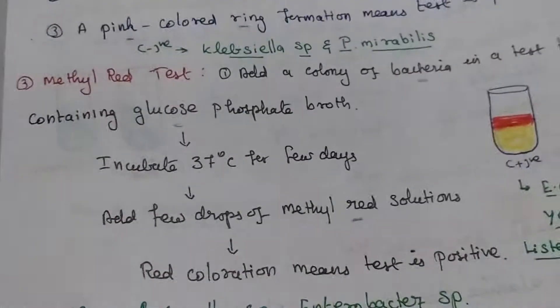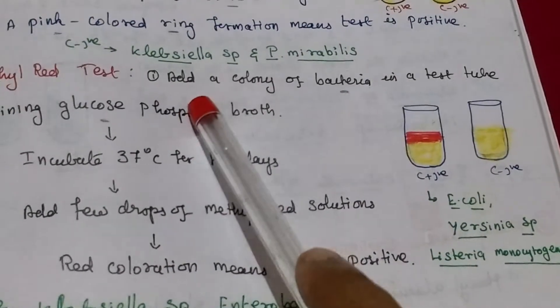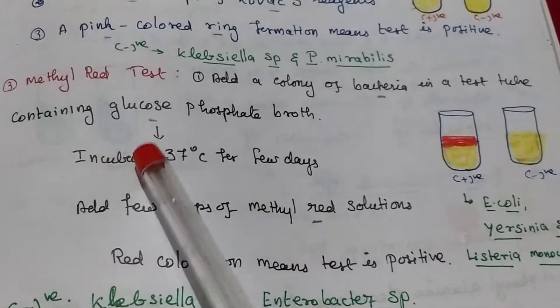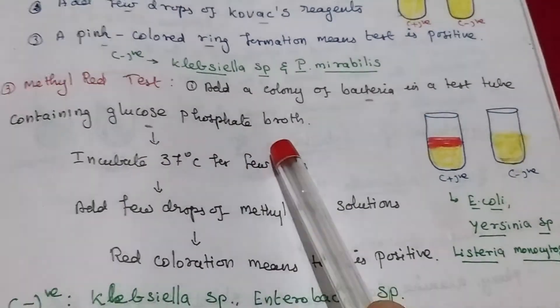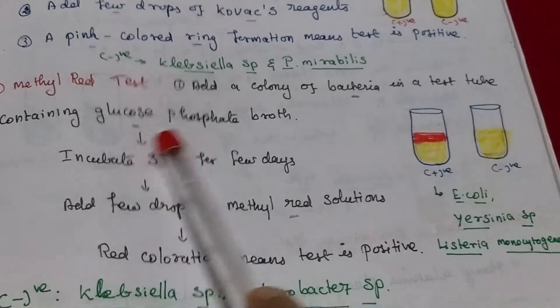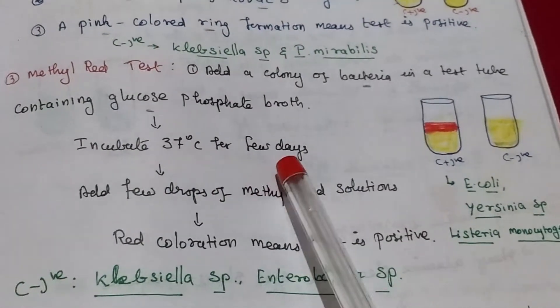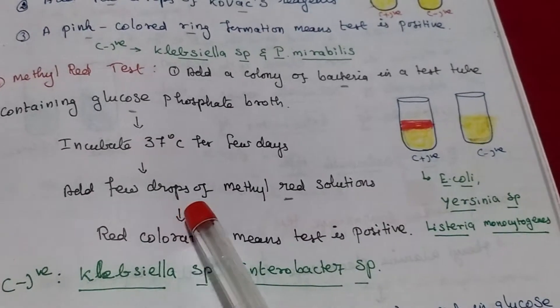Third test, methyl red test. Add a colony of bacteria in the test tube containing glucose phosphate broth. Methyl red we are using glucose phosphate broth. Incubated 37 degrees Celsius for few days.